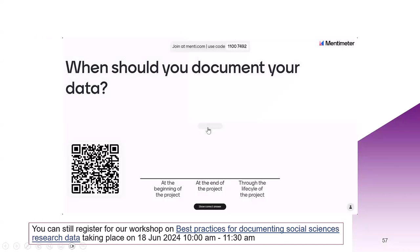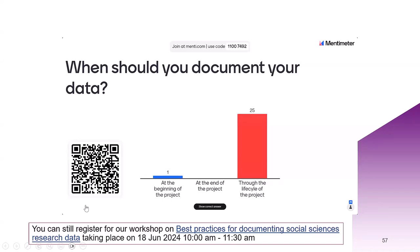When should you document your data? The answer is throughout the life cycle of the project. At the beginning you won't know some information; at the end you may have forgotten some. Treating documentation as a living process — both study level and data level, even if just in a Word document — ensures you have good quality documentation. The leading poll response was 'throughout the life cycle of the project,' which is correct.